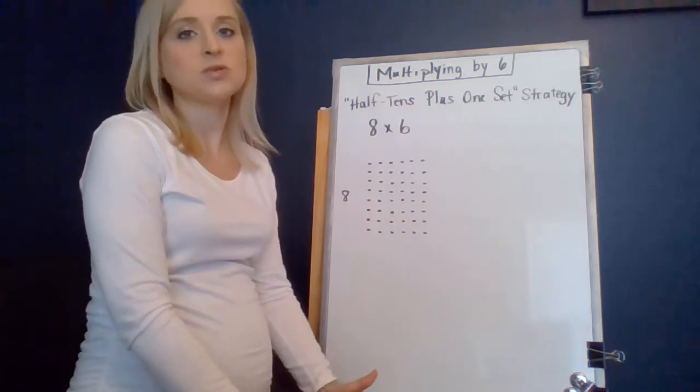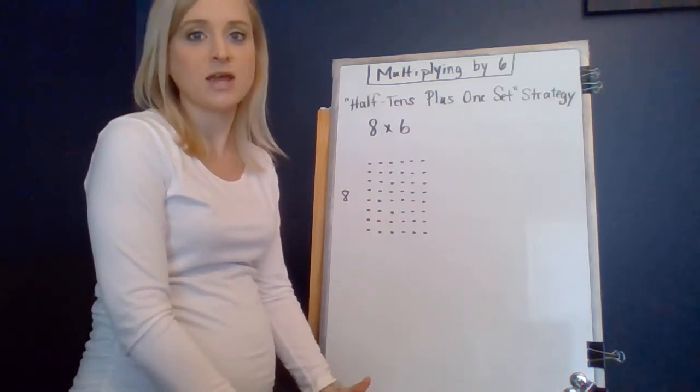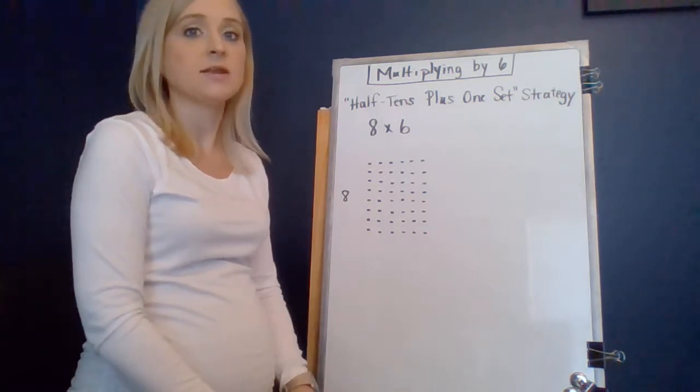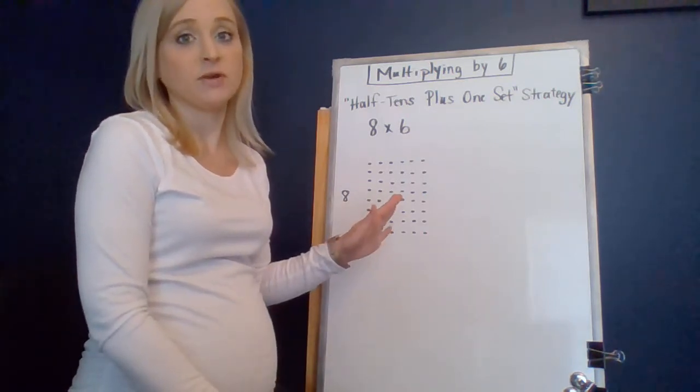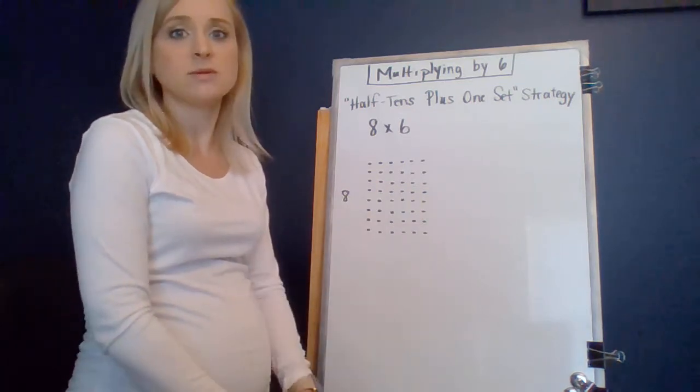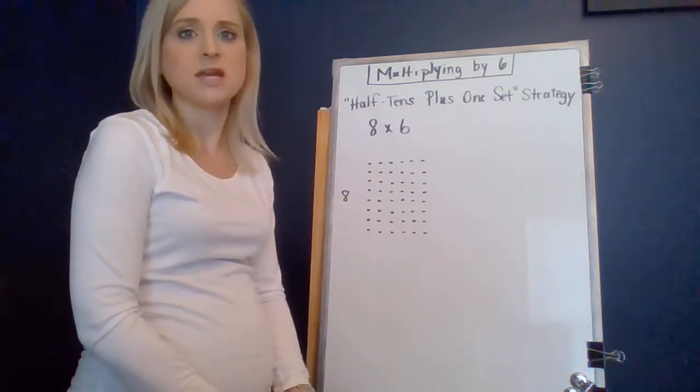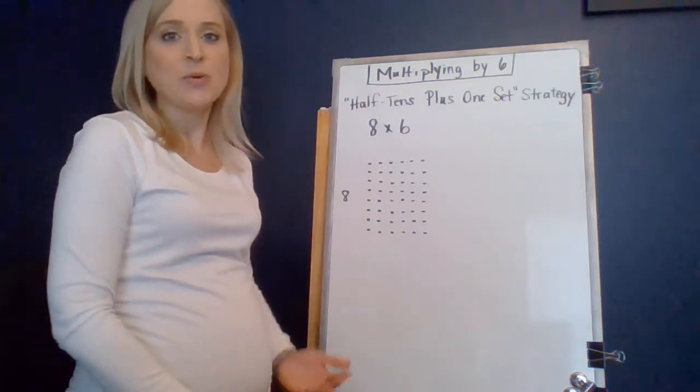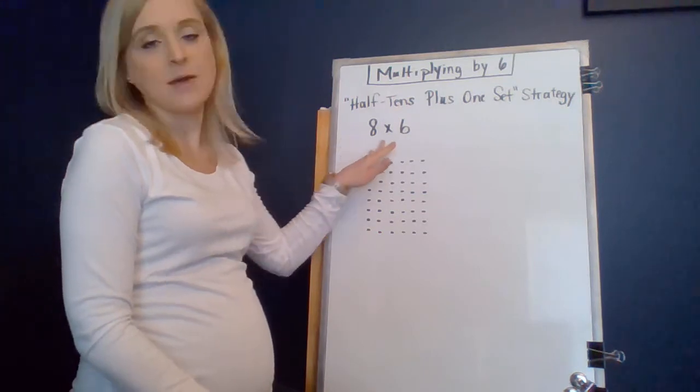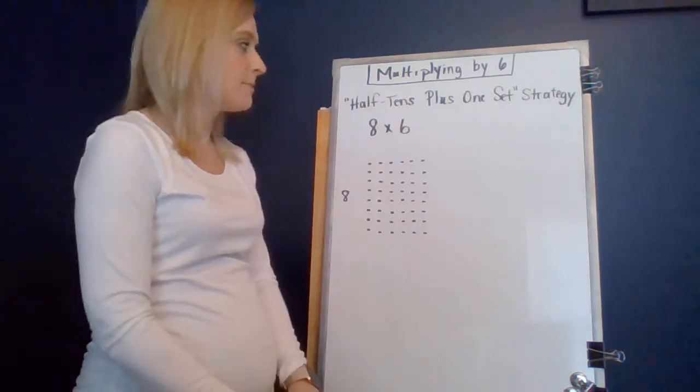Remember, this is just one strategy. It's not the only strategy, it's not the be-all, end-all strategy. So always keep in mind that this may not be the best strategy for you, but it is a strategy to consider. It might work for some of those basic facts problems that you really struggle with. One of the biggest basic facts that kids struggle with is 8 times 6 or in reverse 6 times 8.